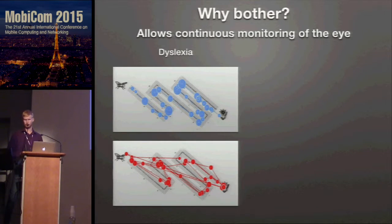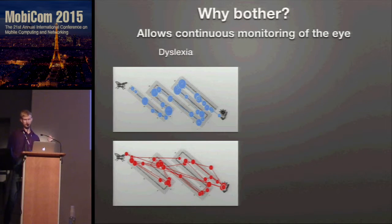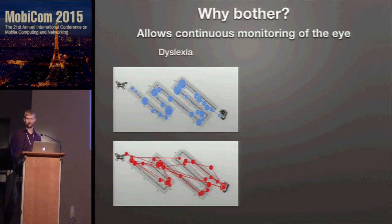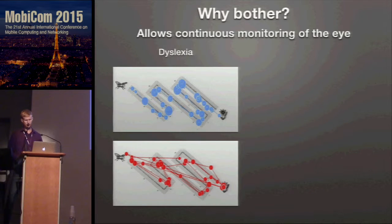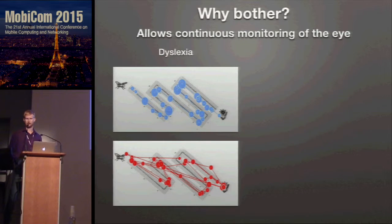In terms of health, dyslexia is one interesting example. Dyslexic individuals have very distinctive eye movement patterns when presented with a visual task like reading, or in this case solving a maze. The blue track is someone without dyslexia, and the red is with dyslexia. You could use eye tracking to identify it and possibly help individuals with these kinds of tasks.